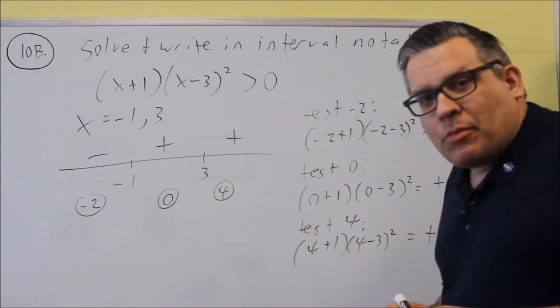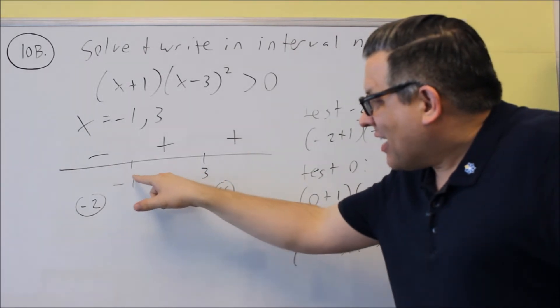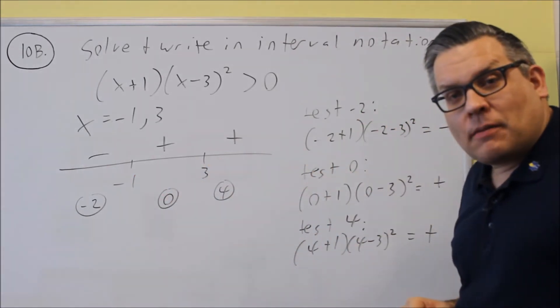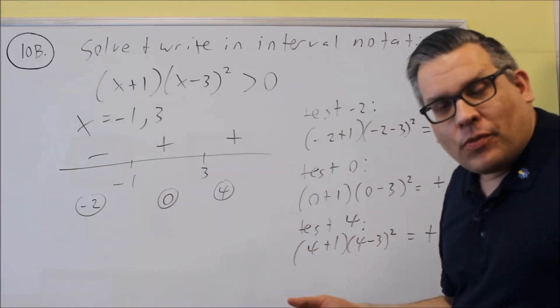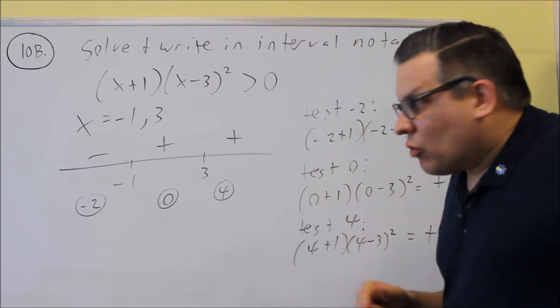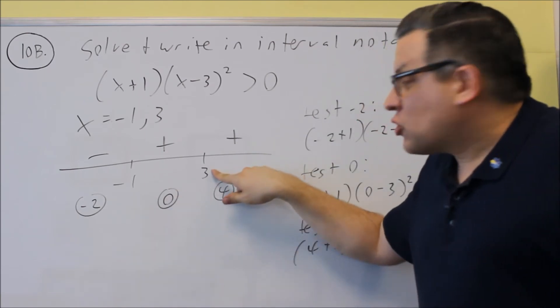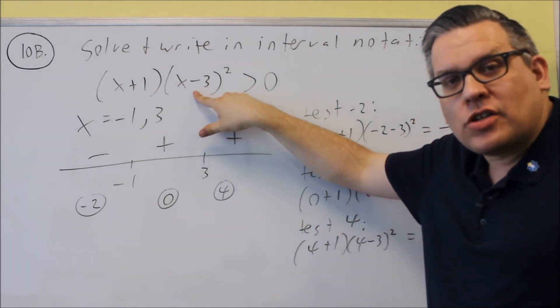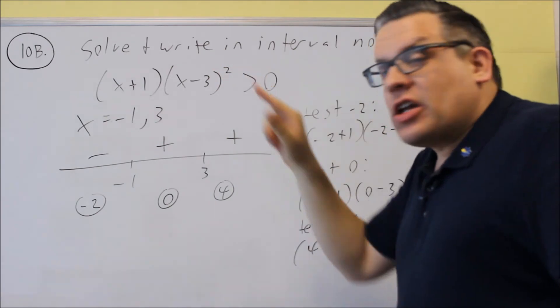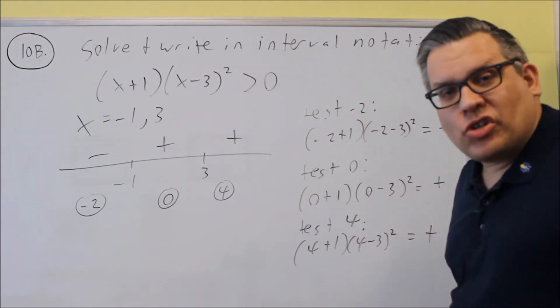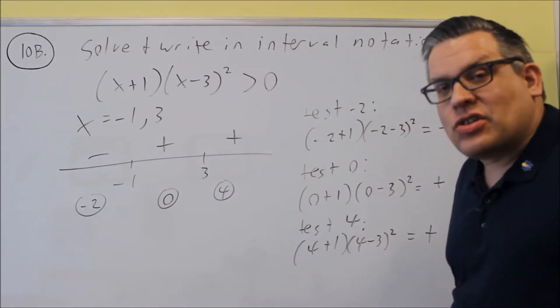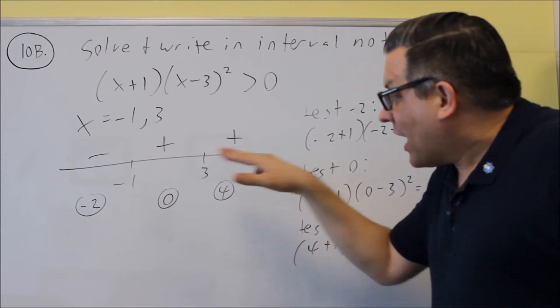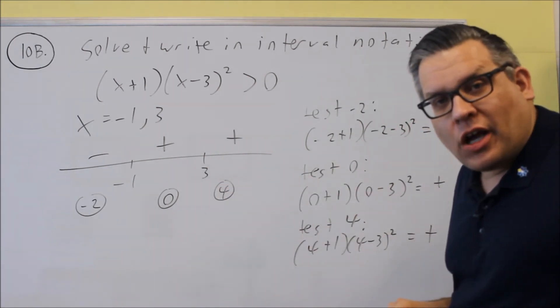If I were to write my answer as negative one to infinity, it would actually be wrong. Let's talk about the reason why. What happens when I put three into here? Well, if I put three into the original equation, I'll get a zero here. Zero times anything is zero. I'll end up with zero is greater than zero. That's not a true statement. So therefore, I cannot include three as my answer.